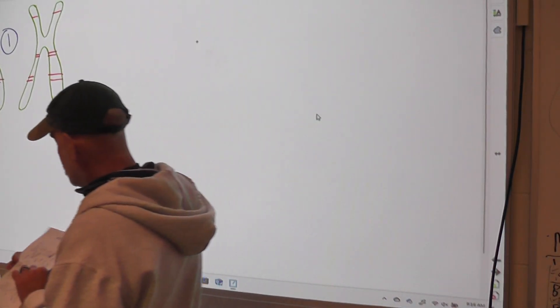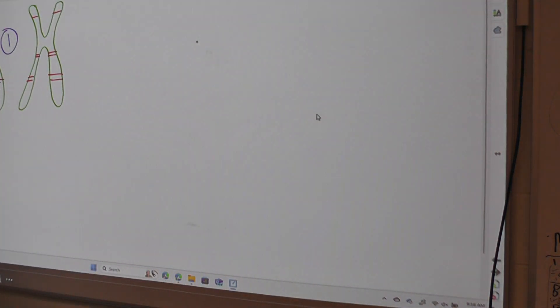So basically, what it starts with is, with a partner, you're going to get one sheet of paper. It's either going to say type 1 or type 2 at the top.